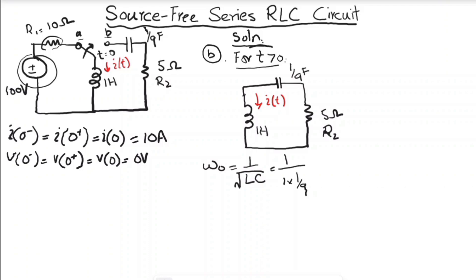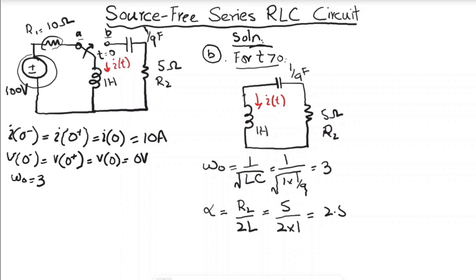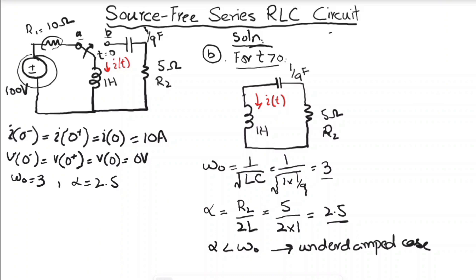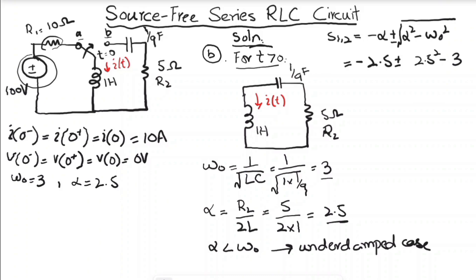We find omega naught = 1/sqrt(LC) = 1/sqrt(1 × 1/9) = 3 rad/s. Then alpha = R2/(2L) = 5/(2×1) = 2.5. Since alpha (2.5) is less than omega naught (3), this is the underdamped case. The roots are s = -alpha ± sqrt(alpha² - omega_naught²) = -2.5 ± sqrt(2.5² - 3²).